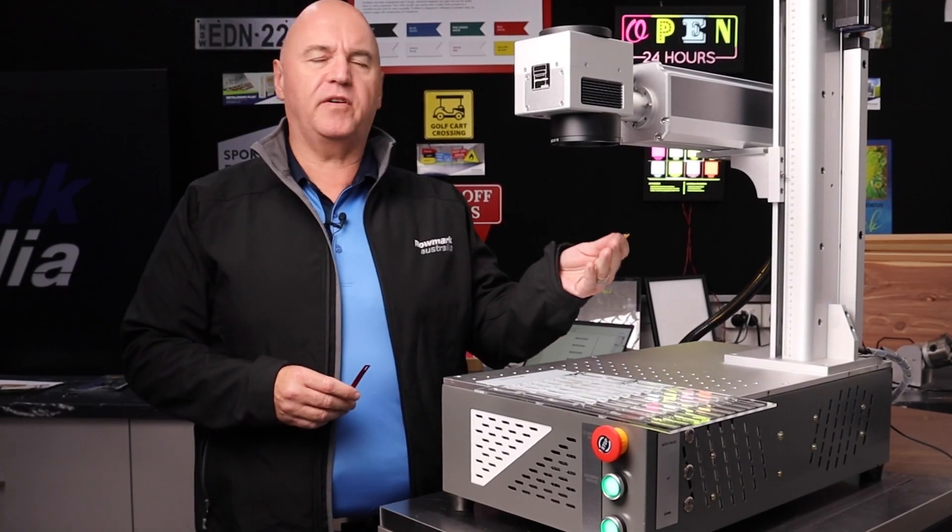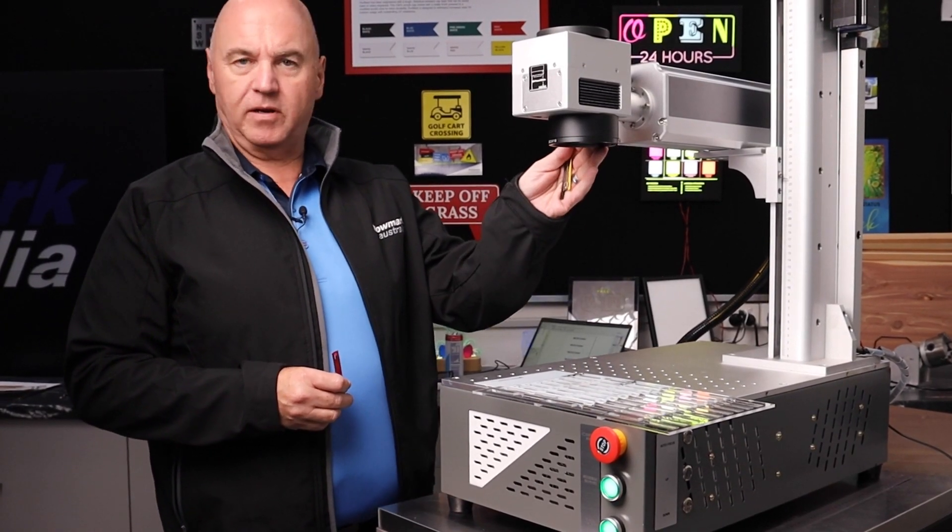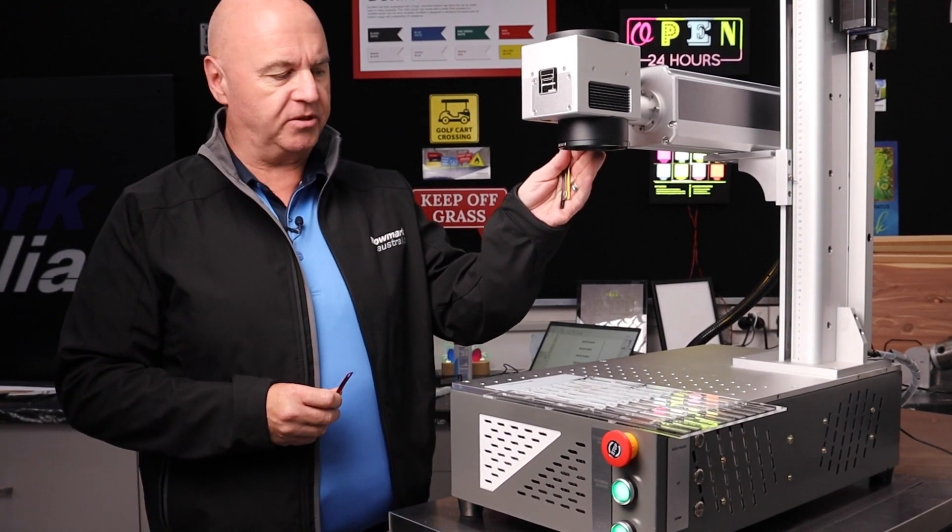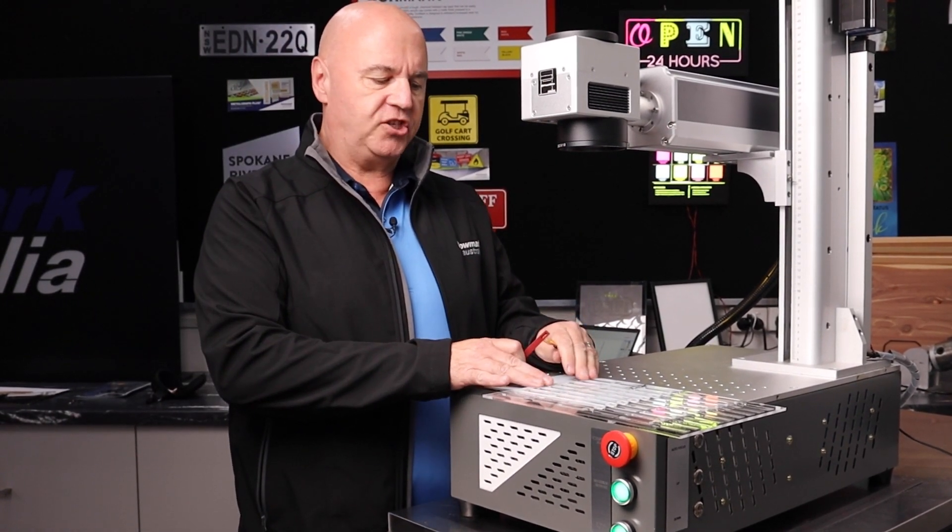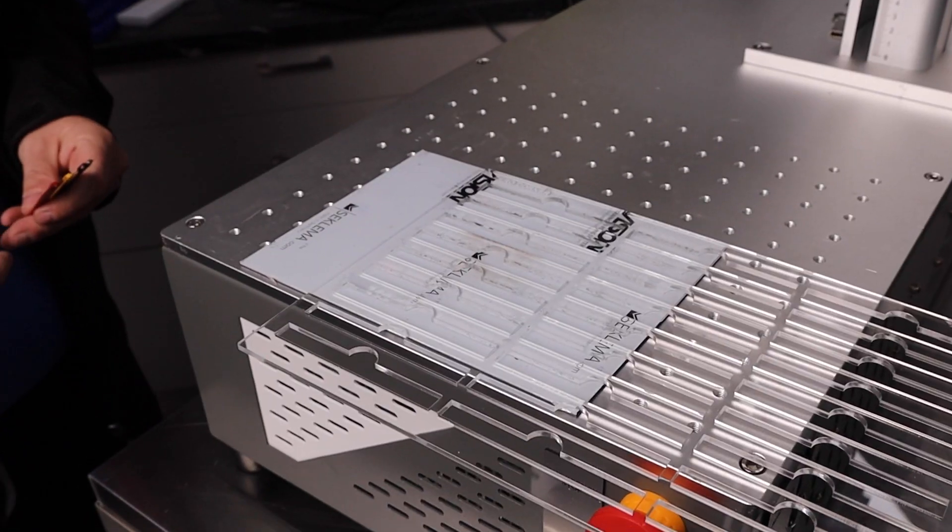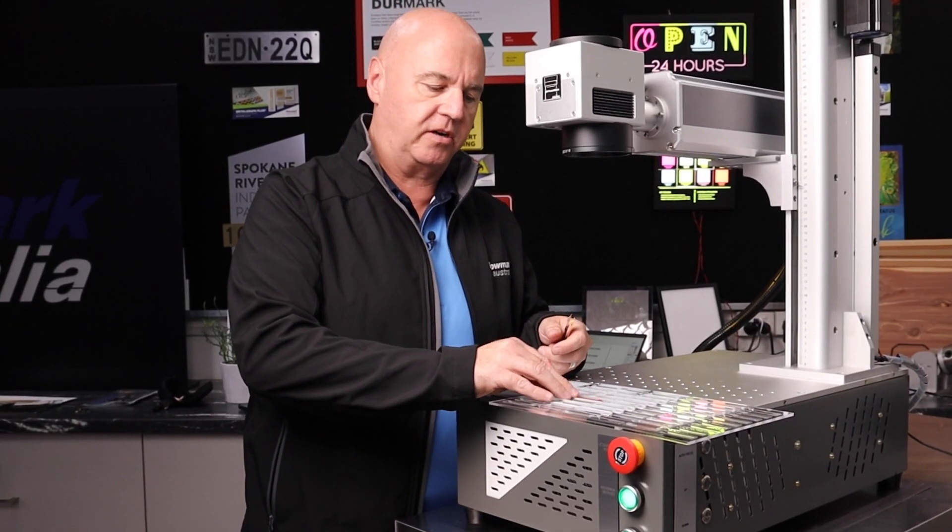Here I am on our 30 watt fibre laser. This is a Galvo laser so it works very quickly compared to a CO2. We've made a jig for the cable markers on the CO2 laser so I'm just going to load these up now and we're going to mark them.